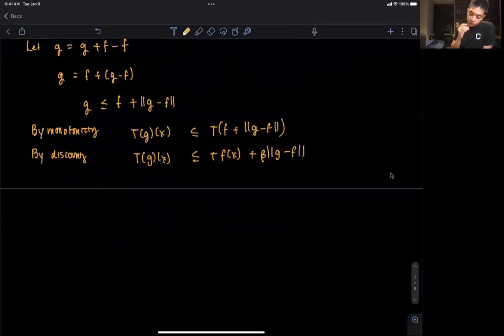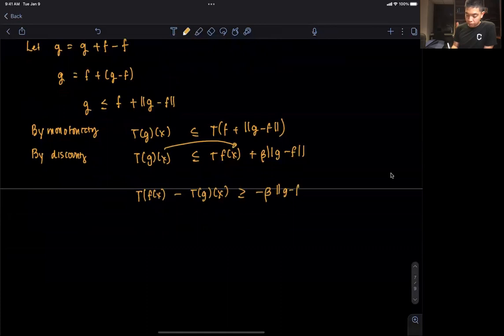Then what we can do is rearrange these. I'll rearrange it in a unique way, but you'll be able to follow along. I got T(f)(x), then I'm going to transpose this to the other side minus T(g)(x). Is greater than or equal to, I'm going to flip the sign, that's going to be negative beta ||g - f||.